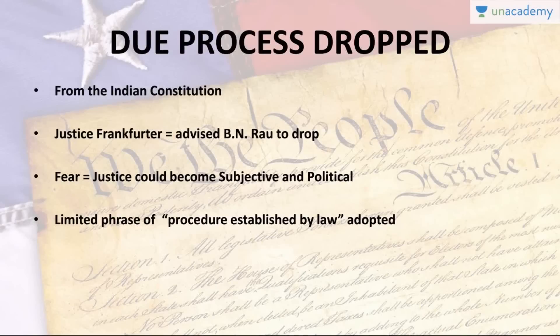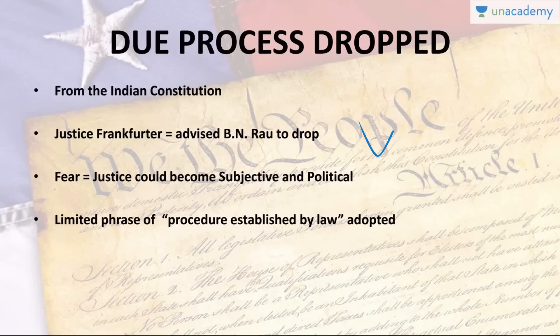Now let us see why due process of law was dropped from the Indian draft constitution. It was Justice Frankfurter who advised BN Rao to drop the due process clause from the draft constitution, because it was considered undemocratic and it imposed an unfair burden on the judiciary. BN Rao was an Indian Civil Service officer and a leading member of the drafting committee.